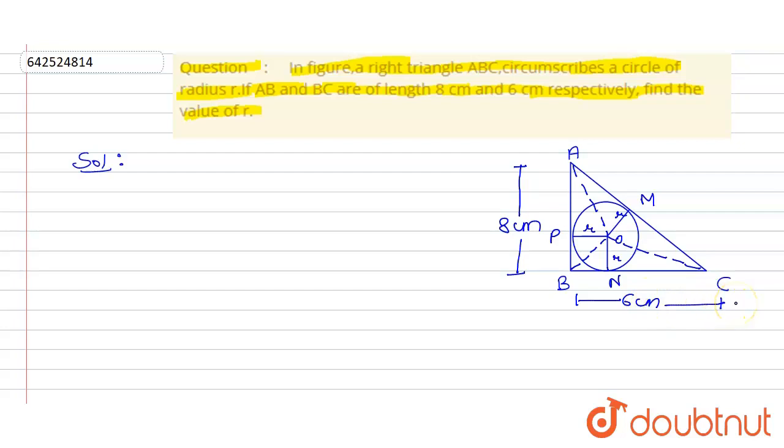AB, BC, and AC are tangent at M, N, and P on the circle. So we know that OP = OM = ON = r, because they are radii of the circle.